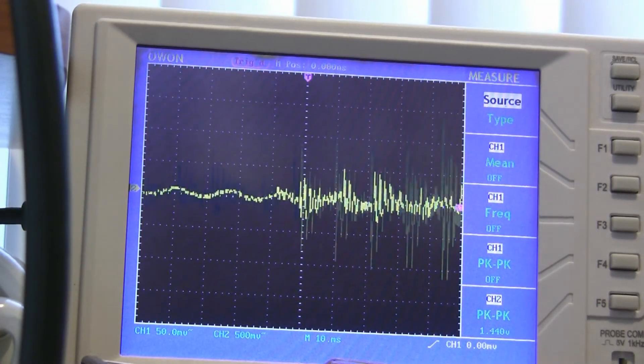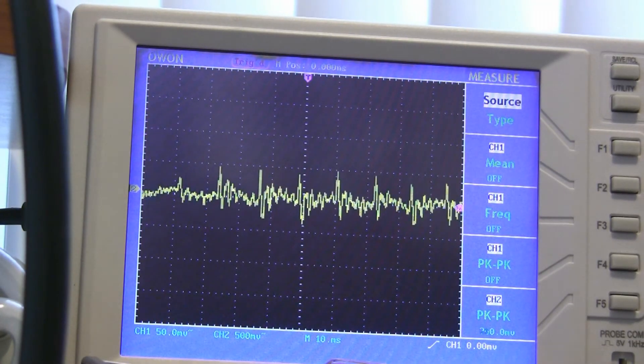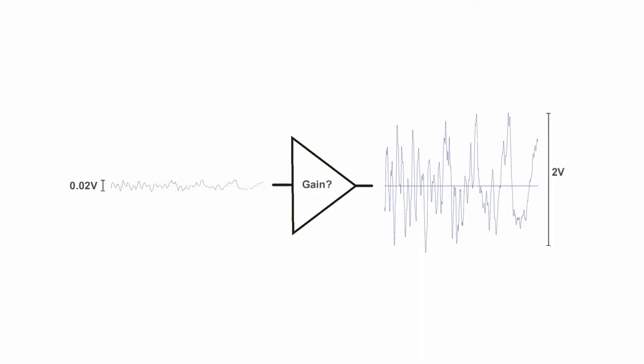By doing some more measurements, I found out that I need to give my earbuds about 2 volts peak to peak to be able to hear things loudly. So I need to take an input waveform that is 20 millivolts and increase it to 2 volts, meaning I want to design an amplifier with a gain of 100.